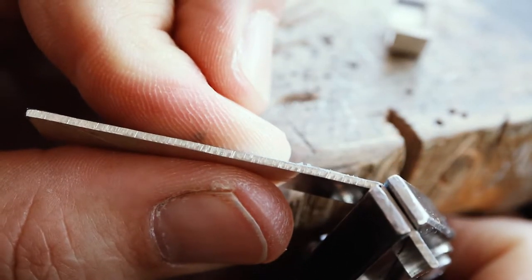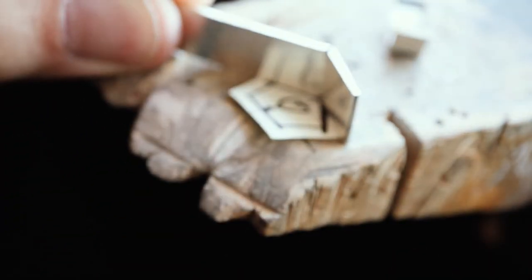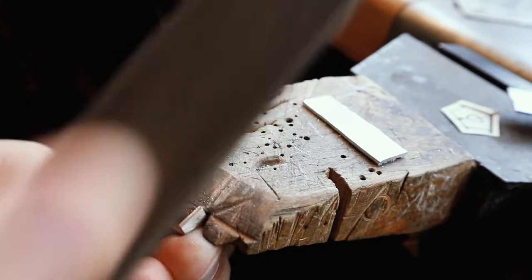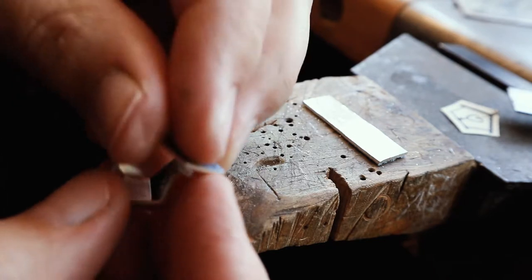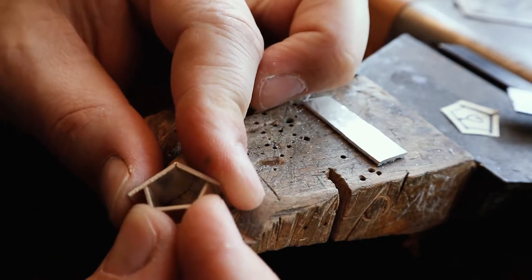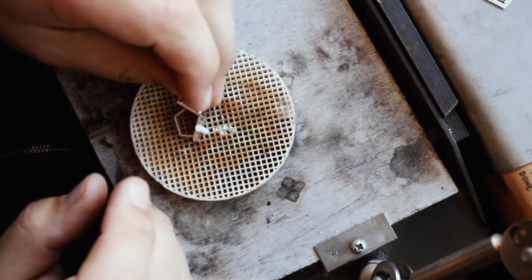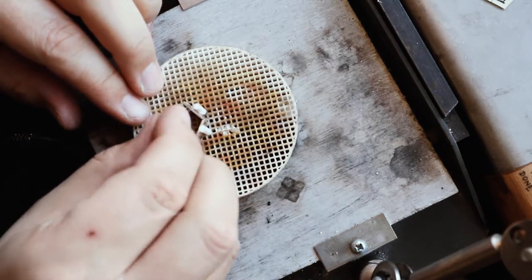Parallel pliers allow me to get a nice even grip all the way across the sheet of metal. Now filing the edges to the roof and making sure I get a tight connection so my solder has no gaps.